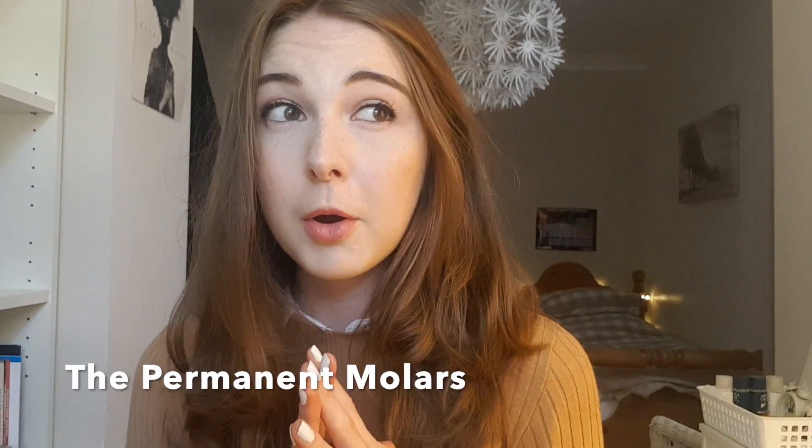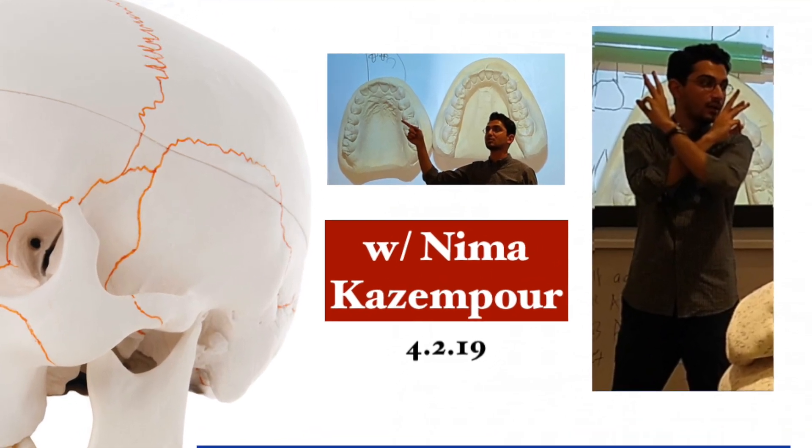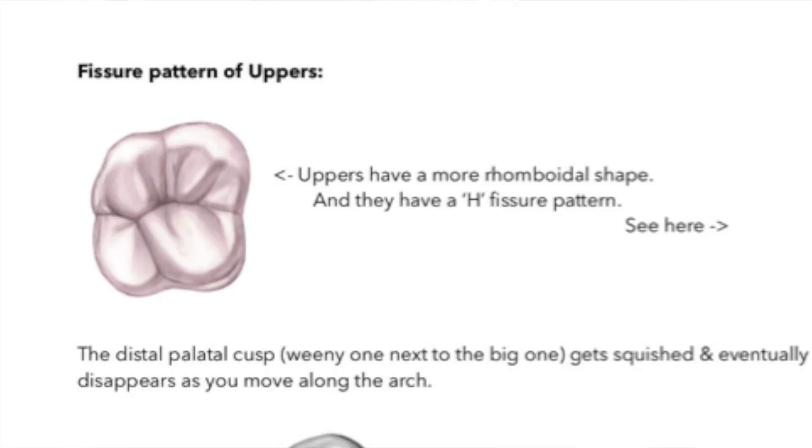So now let's move on to the molars — these are the proper beasts of the human dentition, but they're actually really easy to recognise. Upper molars all have three roots, and lowers have two roots. And then look at the fissure shape and pattern: if you see the figure-eight shaped fissure pattern and four cusps, then you know that's definitely an upper.